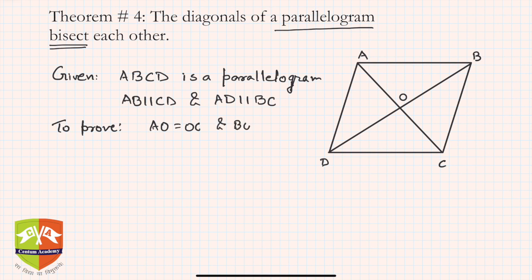That's what is meant by bisection — AC is bisecting BD, and DB is bisecting AC. So we have AO equal to OC and DO equal to OB. This is what we have to prove.